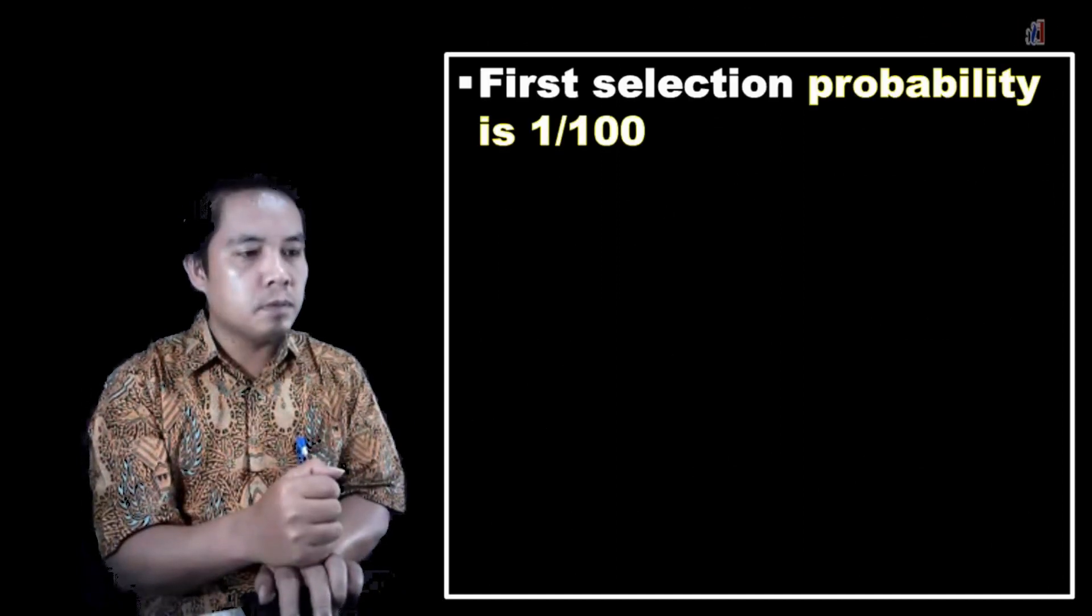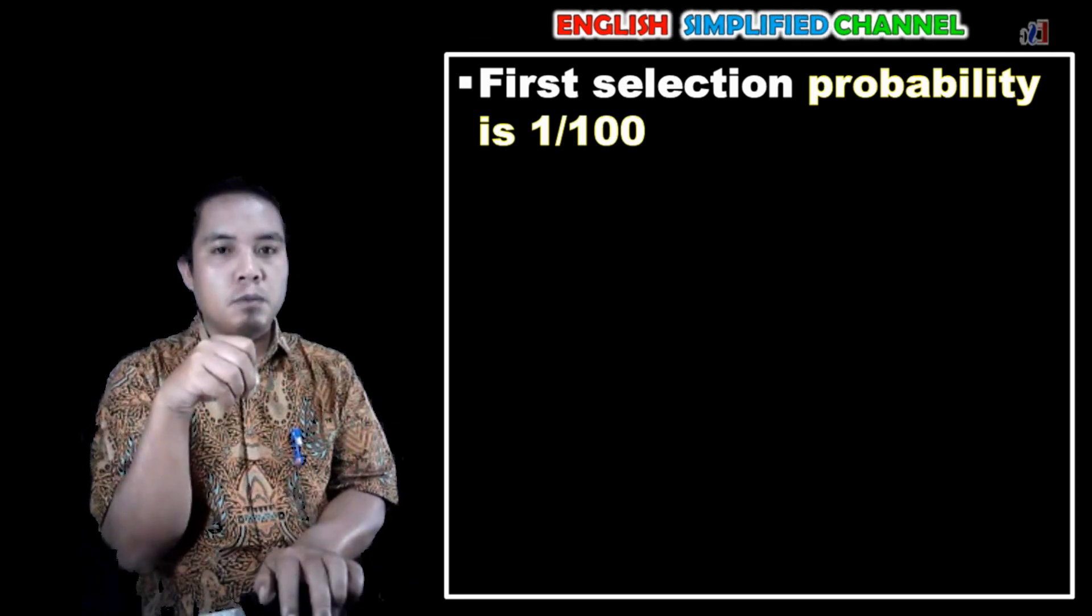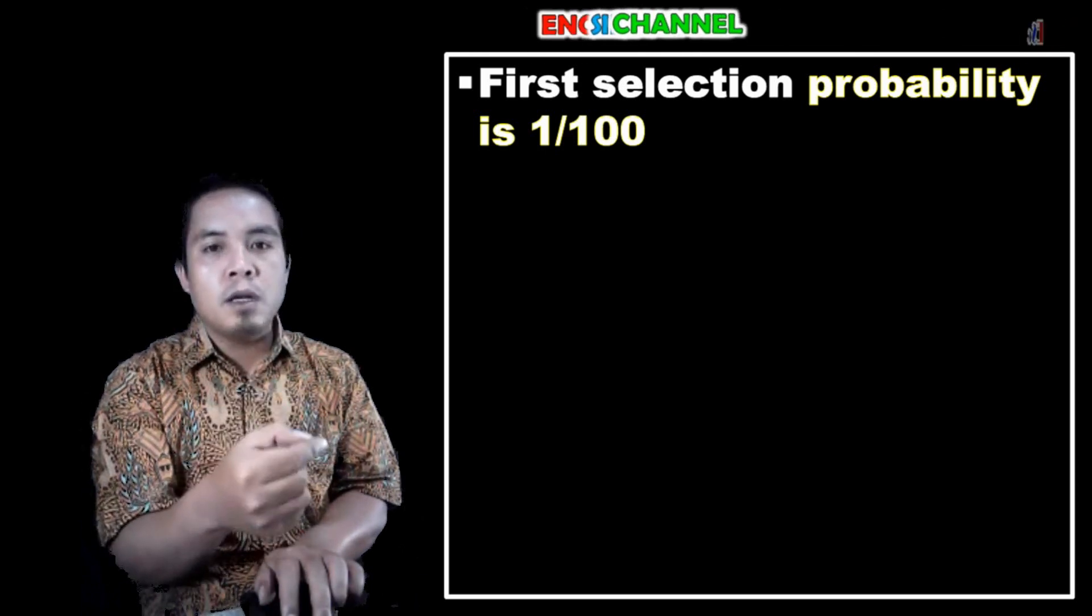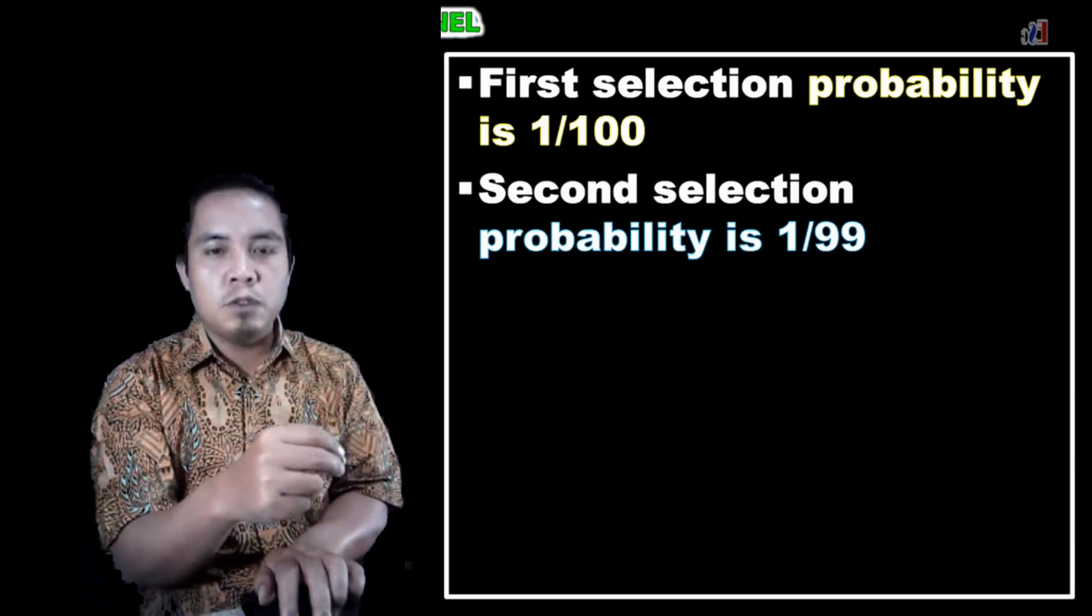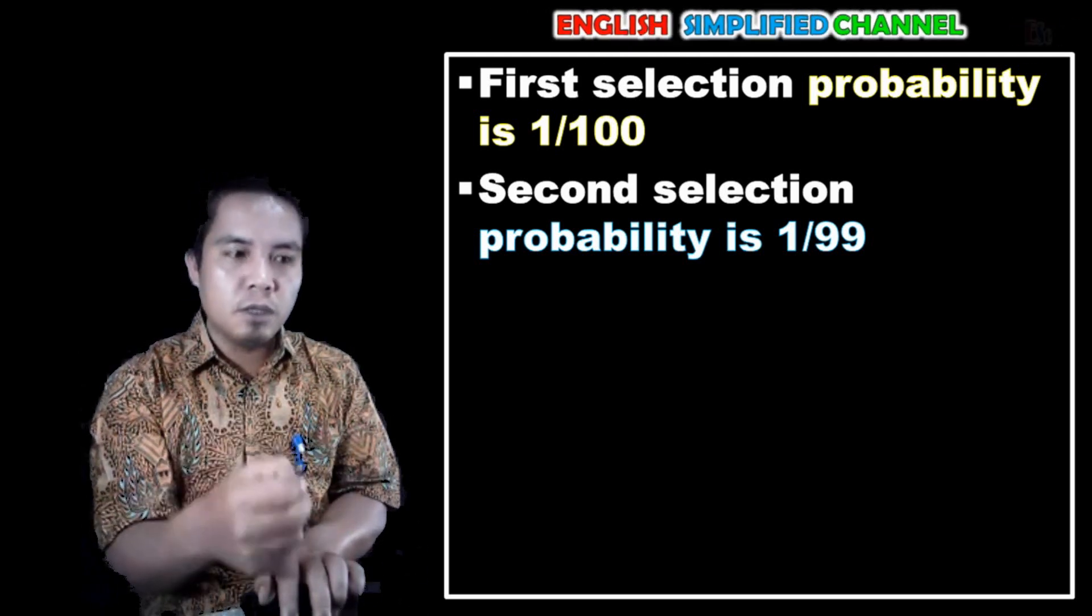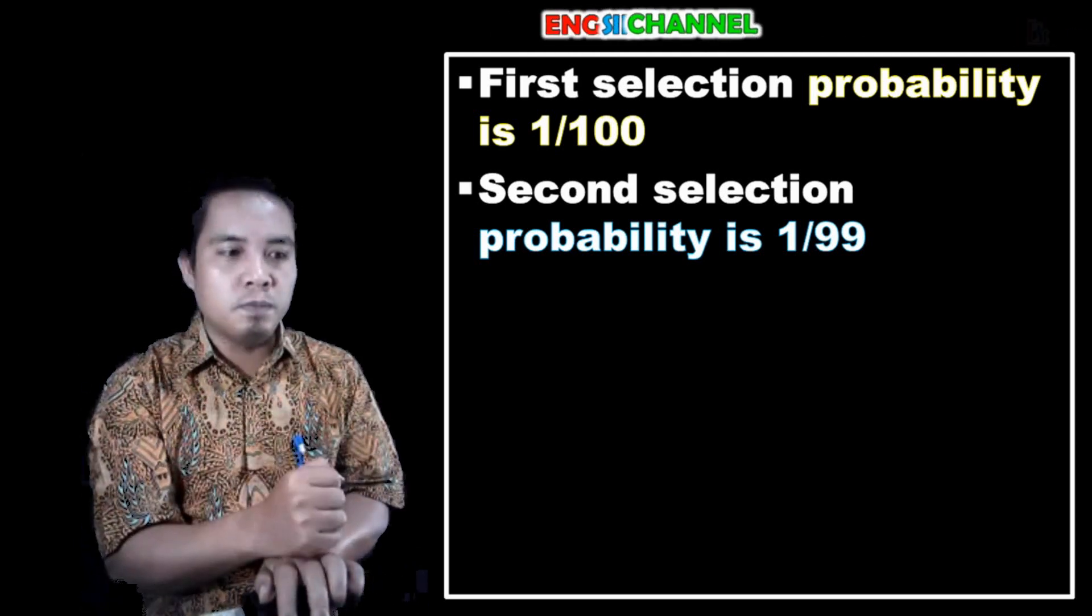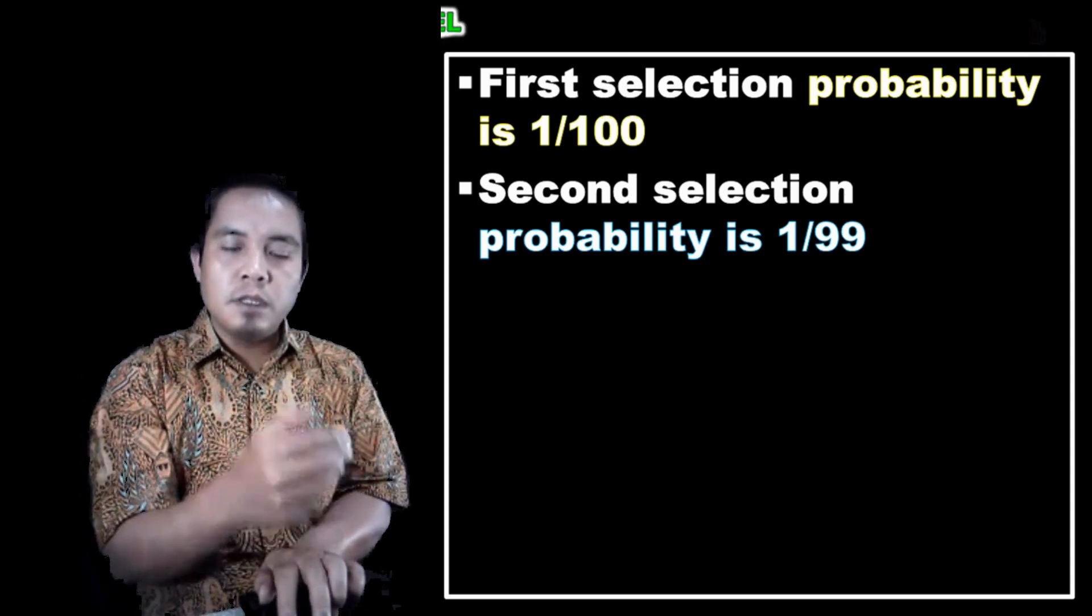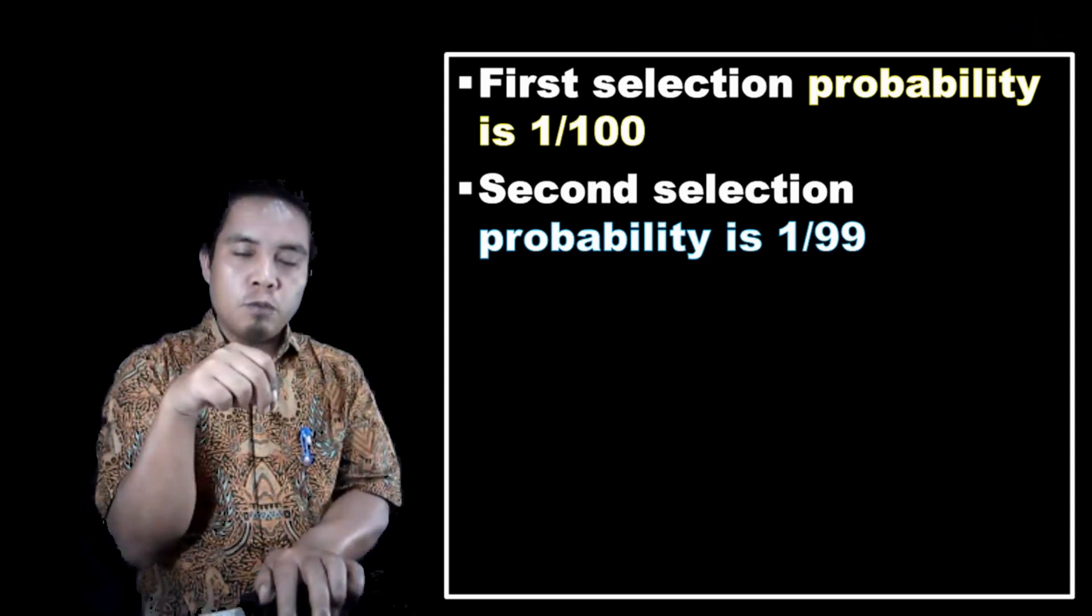And here will be the probability. If we take the first sample from the box, then the probability will be 1 per 100. And if we continue taking the second sample, now the probability is lesser. It will be 1 per 99, I mean, because we have already taken 1 from 100. Then 99 is left.